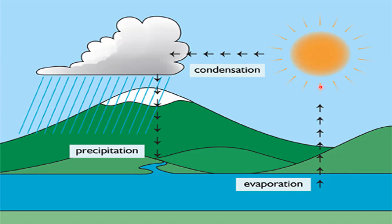The water vapor rises in the atmosphere, cools down, and forms tiny water droplets through a process called condensation. These tiny droplets combine together to form clouds. When they grow bigger and become too heavy to stay up in the air, they fall to the ground as rain, snow, or hail due to the force of gravity.